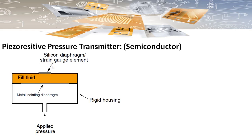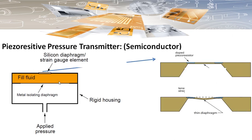An advantage of the semiconductor strain gauge is that there is no need for a separate diaphragm — the silicon semiconductor itself acts as both the diaphragm and the sensing element. However, there is a separate metal isolating diaphragm, because the silicon semiconductor is not compatible with all chemicals and process fluids. When pressure is applied to the isolating diaphragm, it is transferred to the silicon semiconductor through the fill fluid.